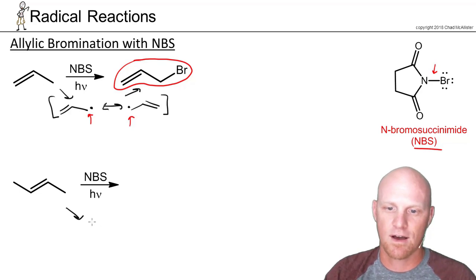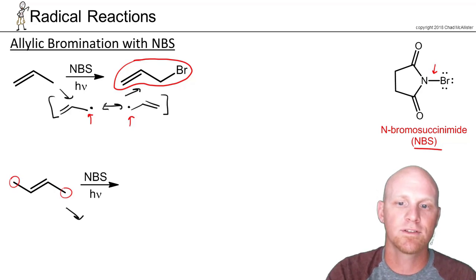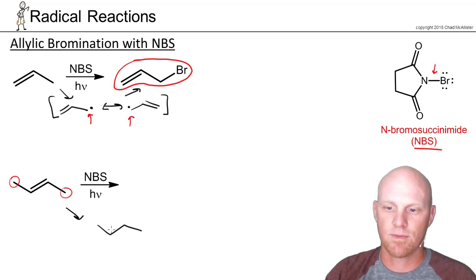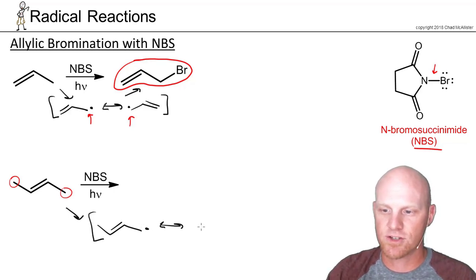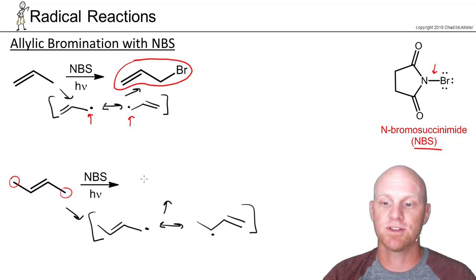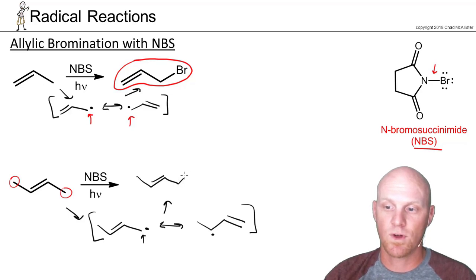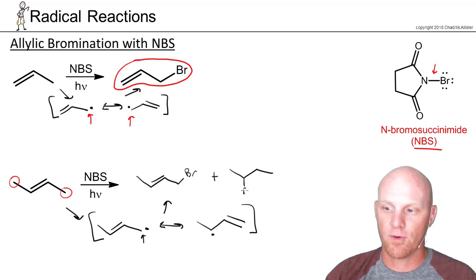In this case, we've got allylic carbons right here and right here, but they're not totally equivalent. We're going to form a resonance-stabilized radical — here's one resonance structure, and here's the other. Because that radical is being shared in two different locations, we have the chance of actually getting two different products. If the bromine adds where the radical is shared in this location, we'll add the bromine there, and if the radical is in the other location, we'll add the bromine there.